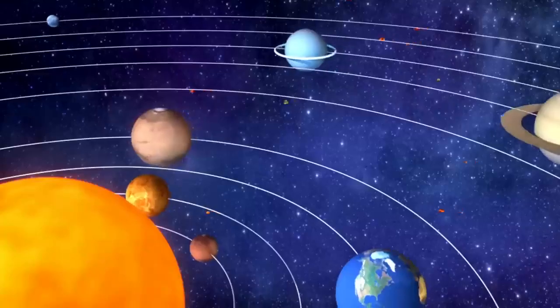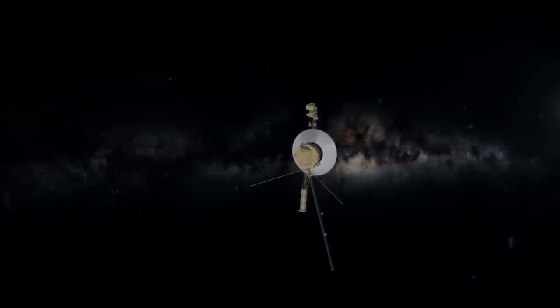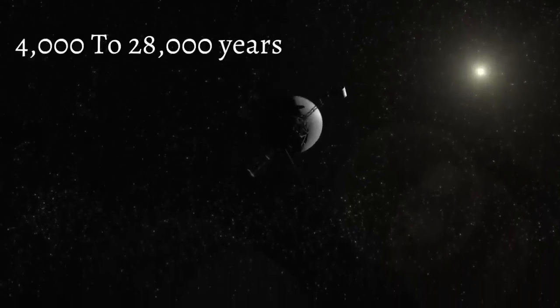If we define our solar system as the Sun and everything that orbits it, Voyager 1 will stay within its confines until it emerges from the Oort cloud in another 14,000 to 28,000 years.